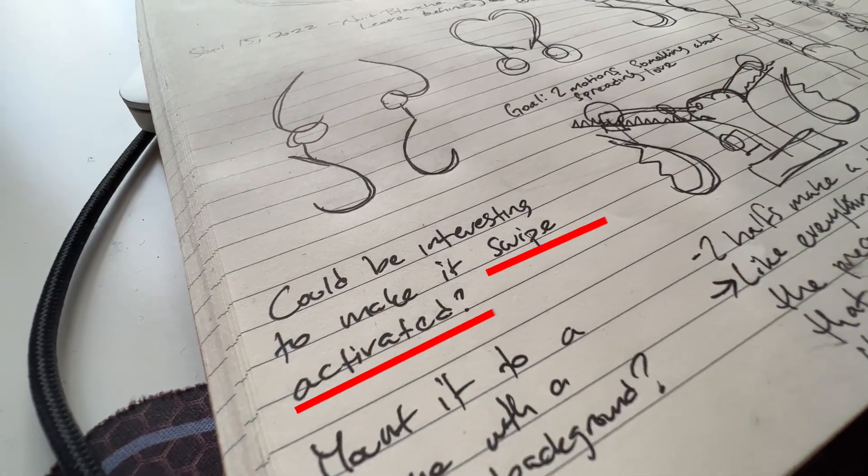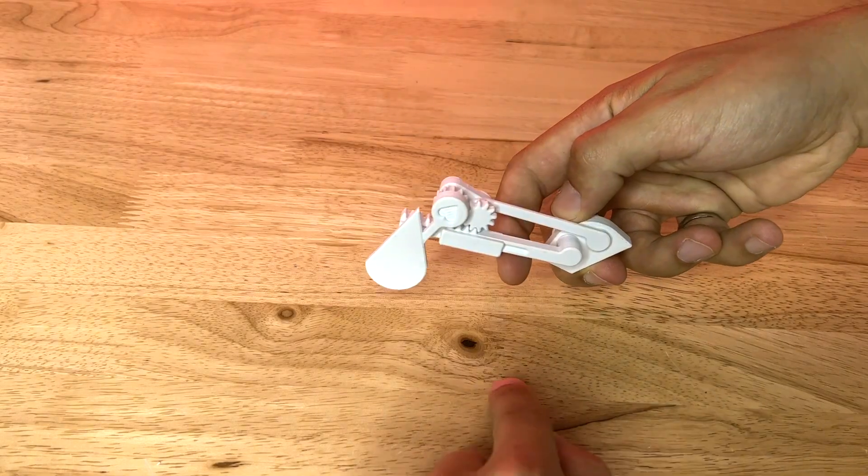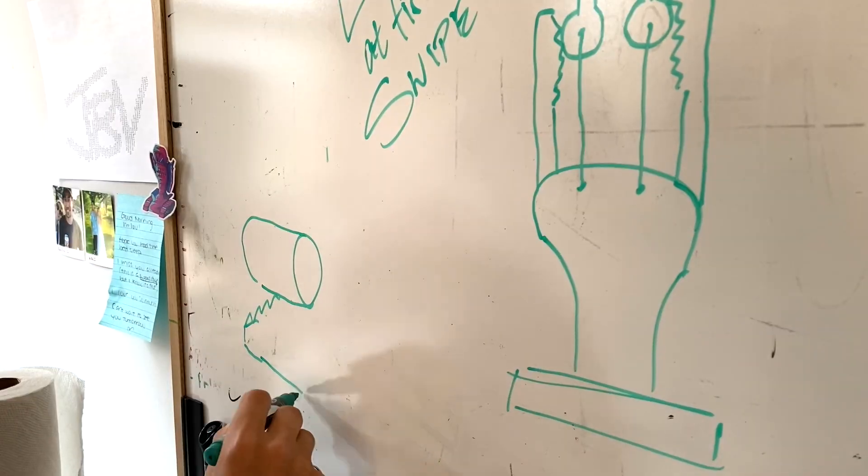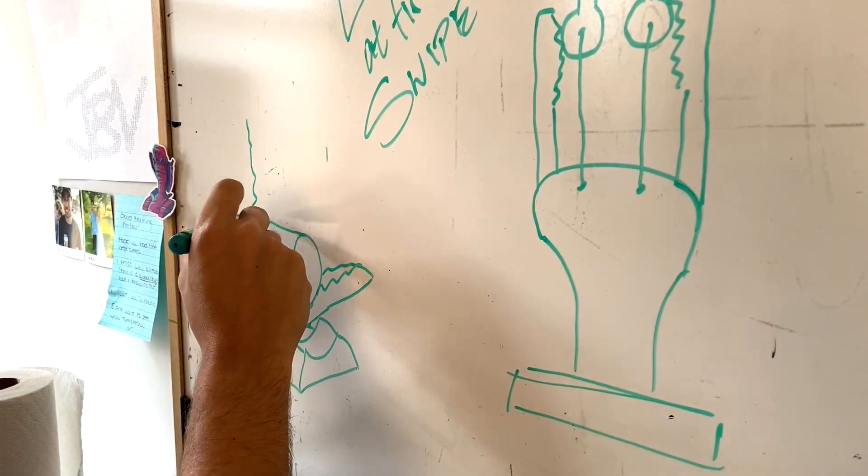Another design choice I made for this sculpture is I wanted there to be a swipe gesture to activate the motion of the sculpture. Often I'll create a quick sketch before I jump into CAD to try to work out what the mechanism is going to look like.